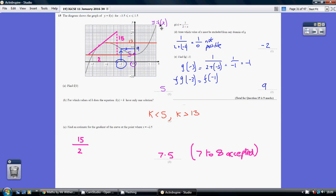We're only going to get one solution, these up here. And below 5, we're just going to get one solution, these solutions here. So k is less than 5 or k is greater than 13.